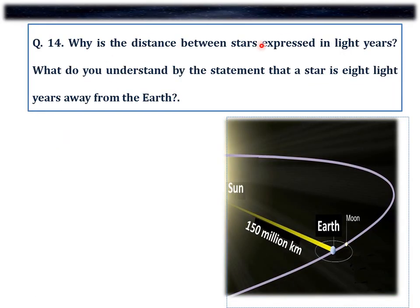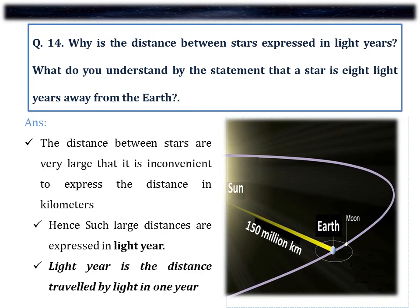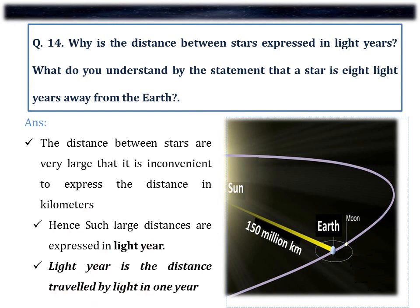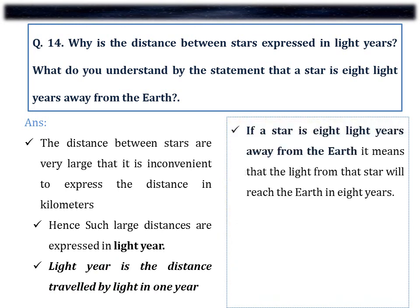Question number 14. Why is the distance between stars expressed in light years? What do you understand by the statement that a star is 8 light years away from the earth? The distances between stars or between stars and the earth are very large. For example, the sun is nearly 150 million kilometers away from the earth. Hence it is inconvenient to express this distance in kilometers, so such large distances are expressed in light years. A light year is the distance traveled by light in one year. If a star is 8 light years away, it means the light from the star will reach the earth in 8 years.